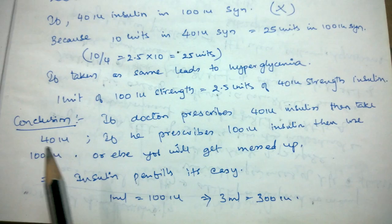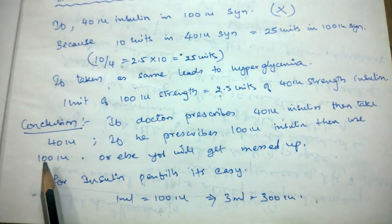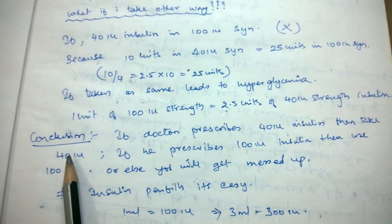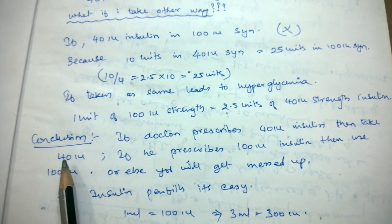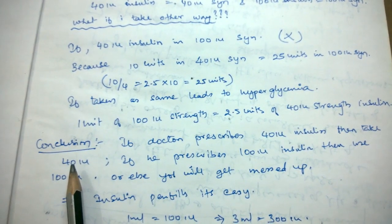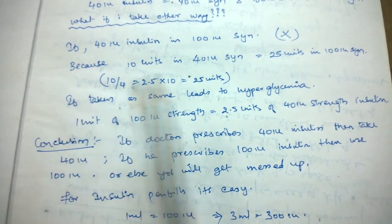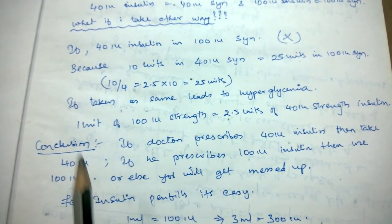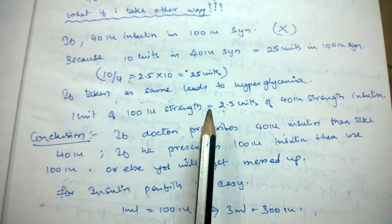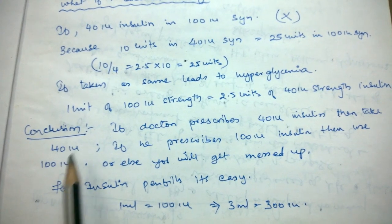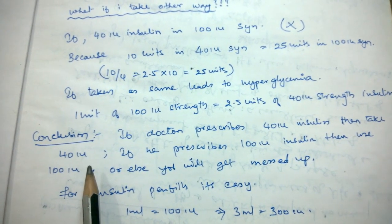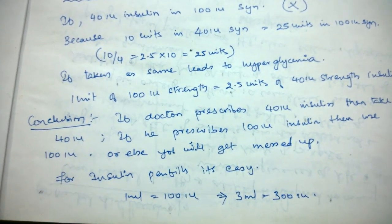Even if the shopkeeper says 40 international units and 100 international units are the same, you should be cautious with your doses. If you switch from one strength to the other, you must calculate the dose accordingly — and the syringe also matters. Never change the syringes or the units the doctor has prescribed; always take what the doctor has asked you to take.